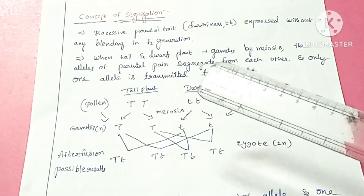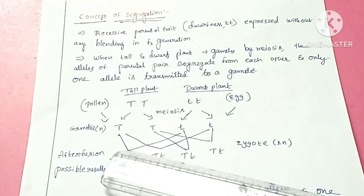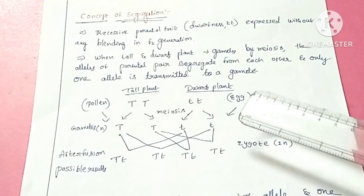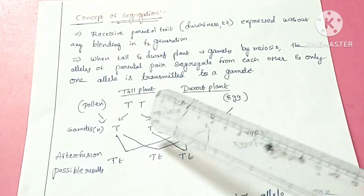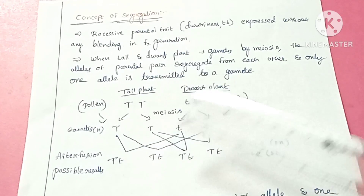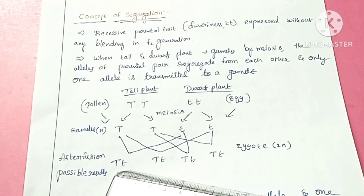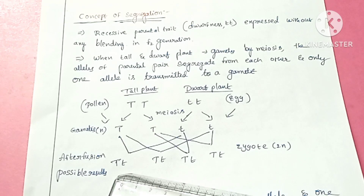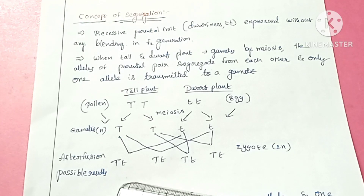During fertilization, the capital T from the male parent through the pollen, and the small t from the female parent through the egg, are united. These two are united and produce a zygote which is in diploid condition, having capital T small d allele. Capital T small d means it is in heterozygous condition, which is also called a hybrid. This process is called the concept of segregation.